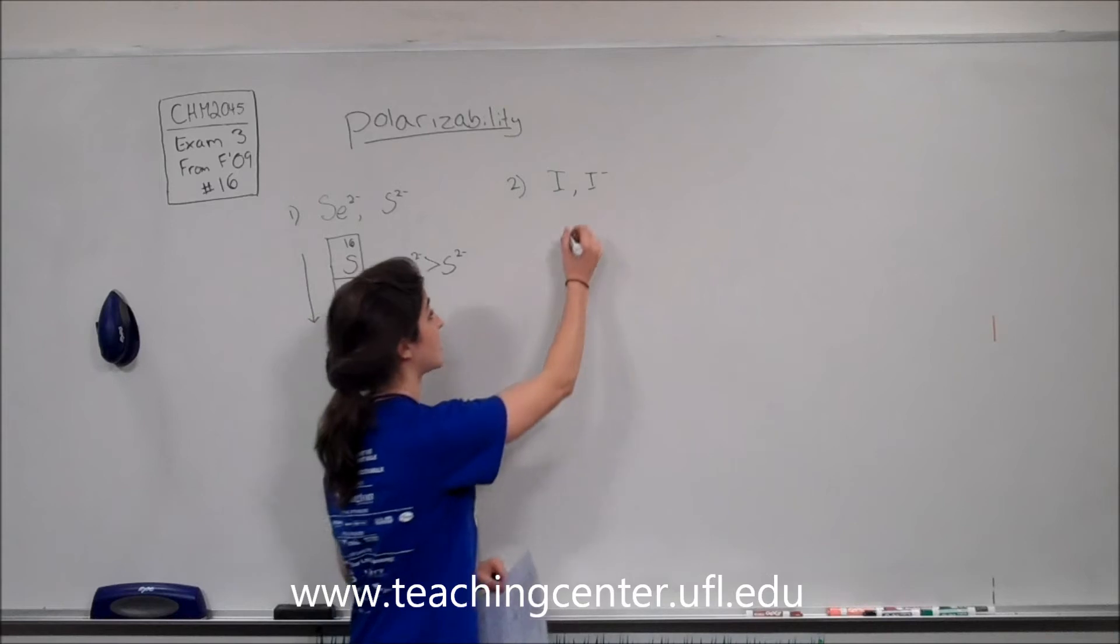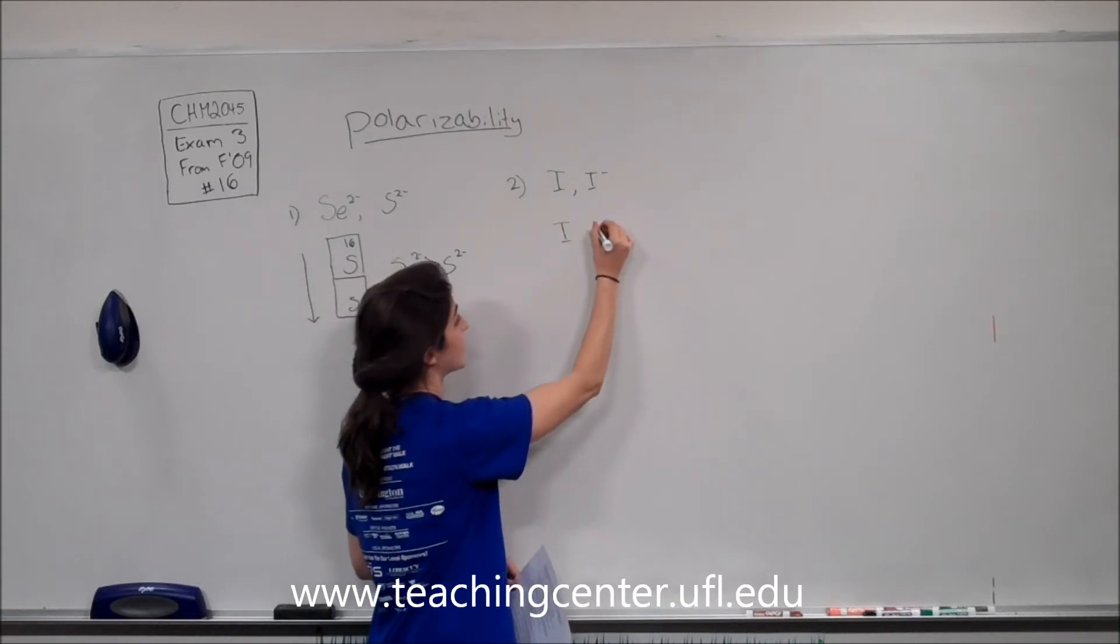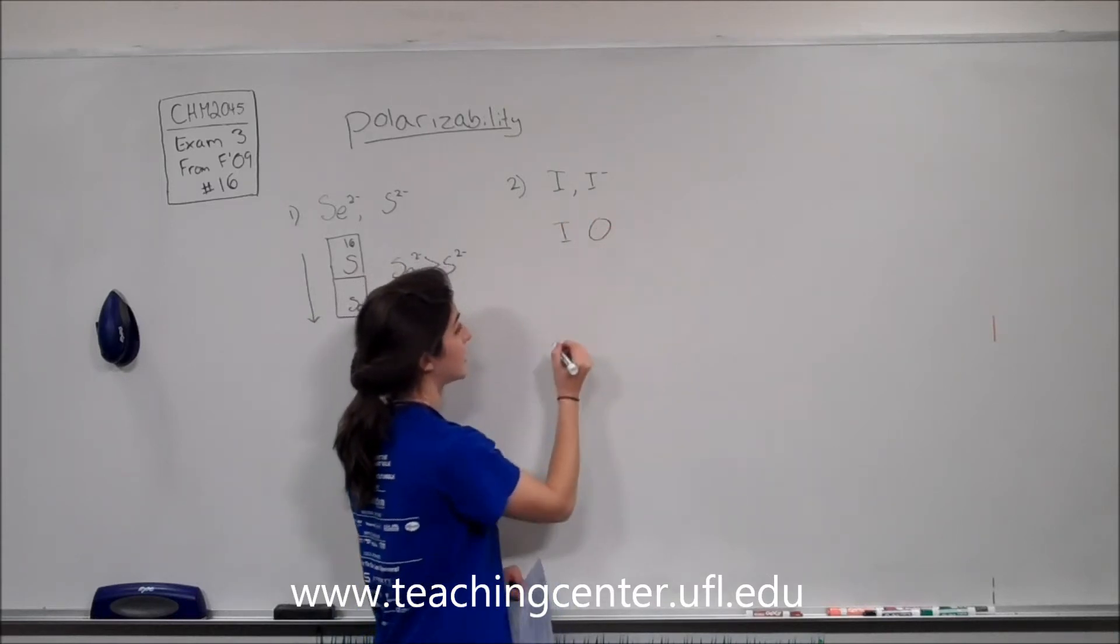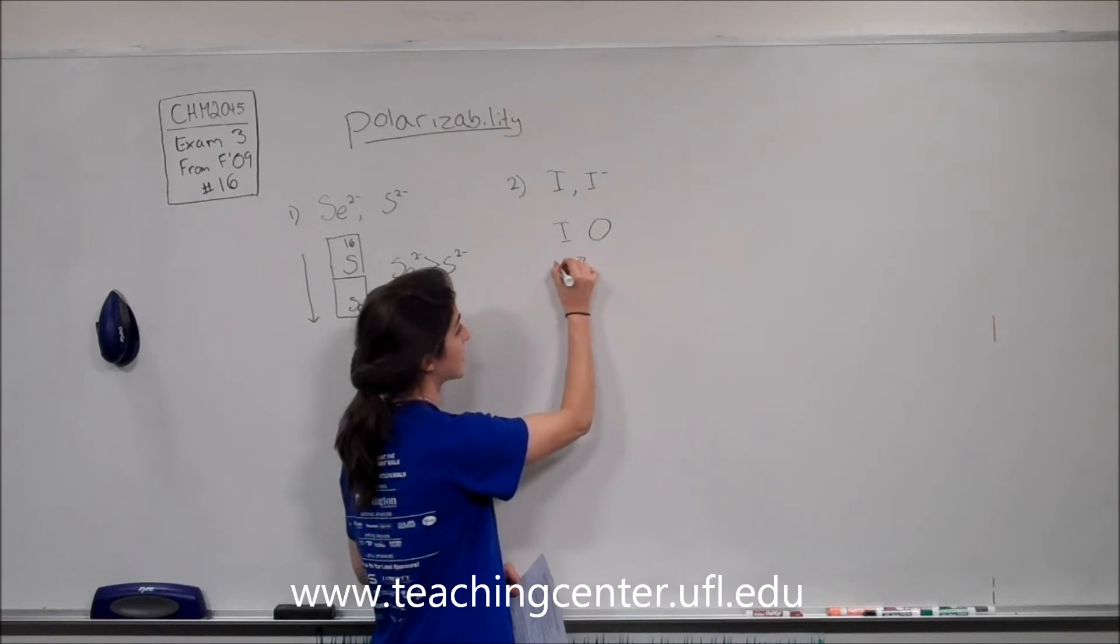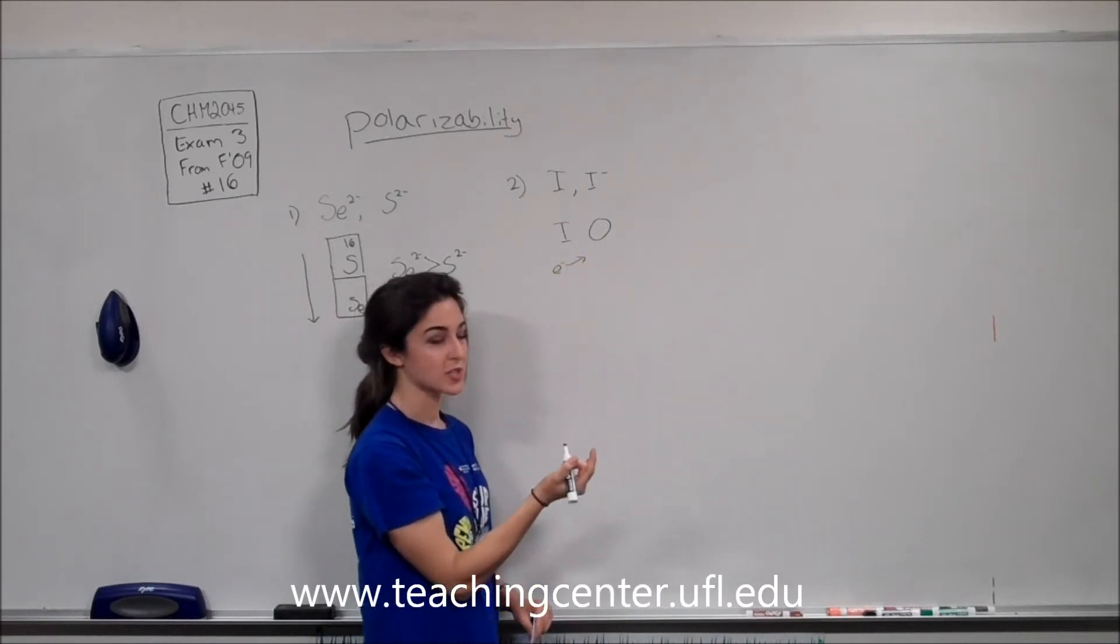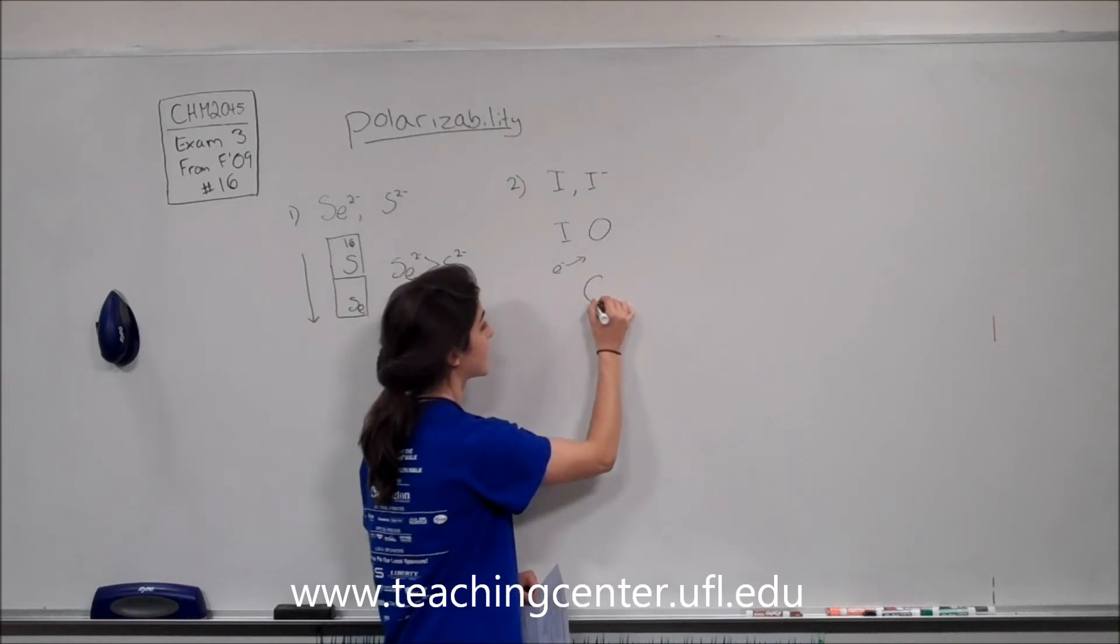And this is because we have iodine here. We'll say it's this size, but if you throw an electron in here, then the atom has to take up an extra electron and the cloud is going to get larger.